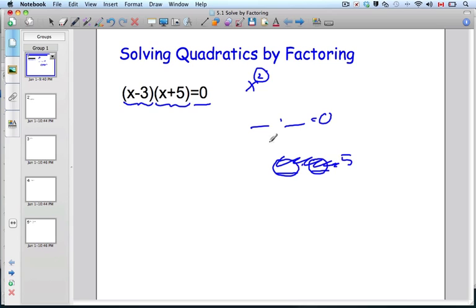I don't want that. I want it equal to 0 because I know, guaranteed, that either this number or this number is 0. And that is called the null factor law.